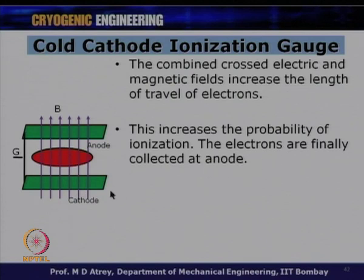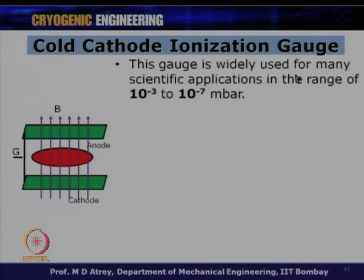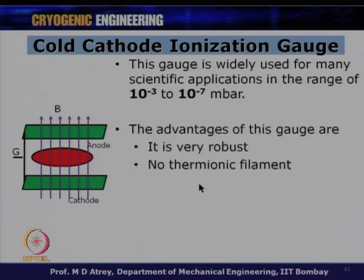The electrons finally reach the anode after spiraling through the residual gas, ionizing molecules along the way. The ionization current is calibrated to read the gas pressure. This gauge is widely used for scientific applications in the range of 10⁻³ to 10⁻⁷ millibar. The main advantage is that there is no thermionic filament — no heating element that could burn out. The disadvantage is that it is normally less accurate than the thermionic gauge.